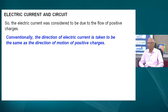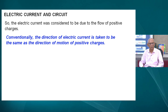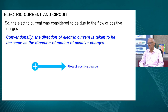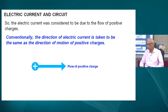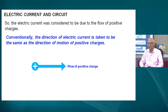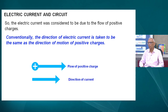Conventionally, the direction of electric current is taken to be the same as the direction of motion of positive charges. You can see a diagrammatic representation — there is a positive charge on your screen and the arrow shows the direction of motion of the positive charge. So flow of positive charges from left to right means current direction is also taken to be from left to right, same as that of motion of the positive charge.